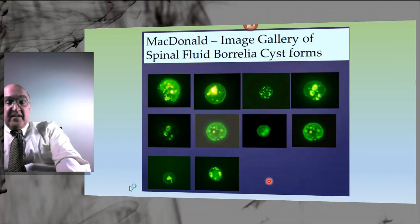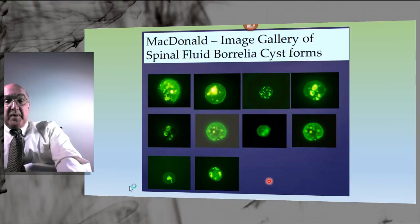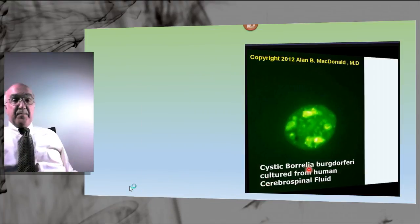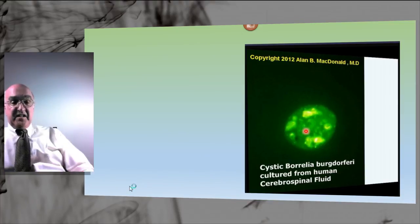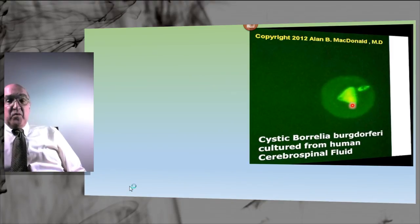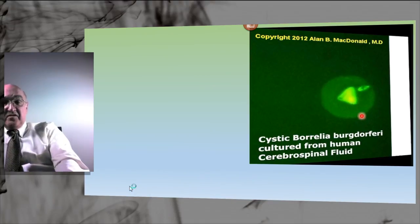These forms are all derived from a culture of spinal fluid found to be positive by Western blot evaluation for evidence of Lyme borreliosis involving the human spinal fluid and causing painful radiculoneuropathy. After antibiotic treatment, the pain diminished and the patient returned to normal health.